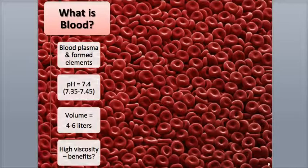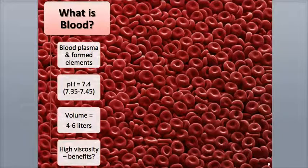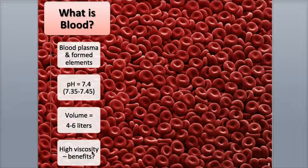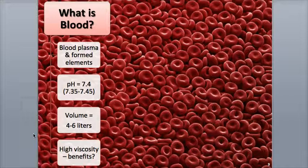Now let's examine some of the major physical characteristics of blood. Blood is denser and, like the old phrase, really thicker or more viscous than water, due to its concentration of proteins within the blood plasma. This higher viscosity can help move blood more slowly through the capillaries, making the exchange of gases, nutrients, and wastes more efficient.